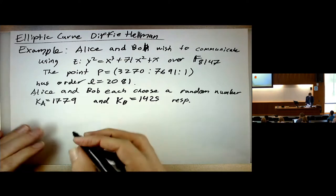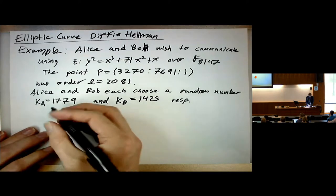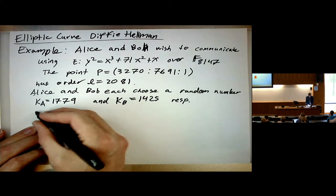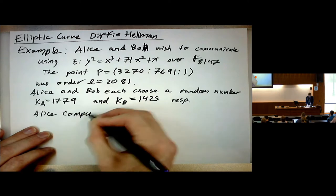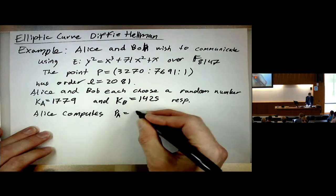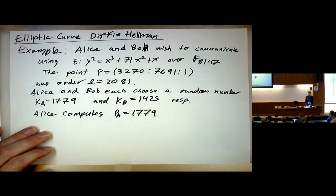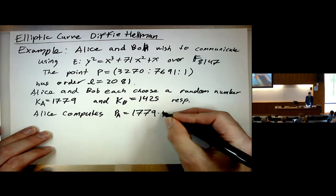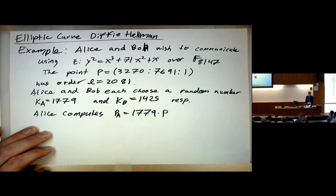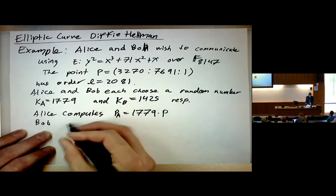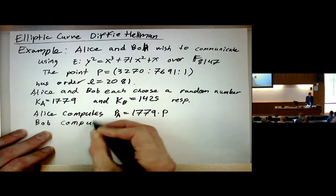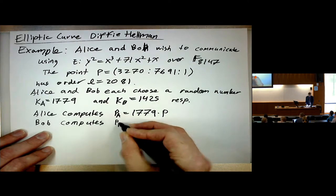This can be done in the multiplicative group, but it's better to do it on the elliptic curve. So they first need to compute something public that they can give to other people. So Alice computes P_A - she uses her private key random number which she uses to repeatedly add P to itself.